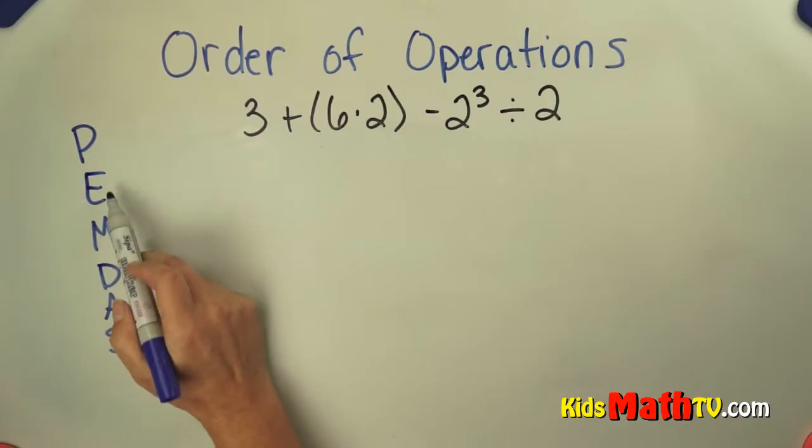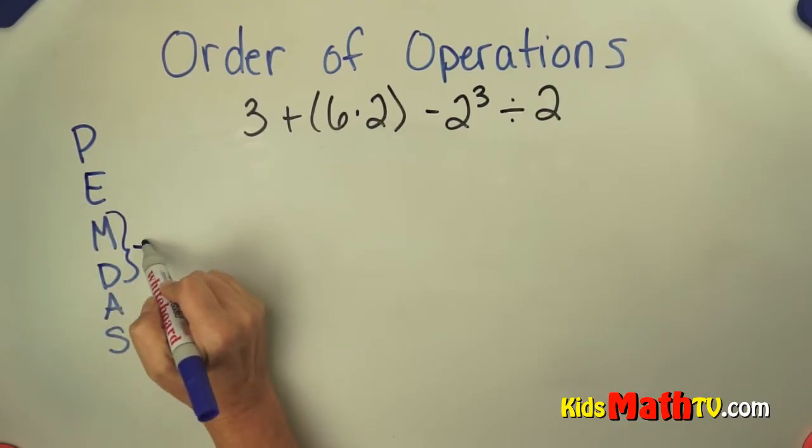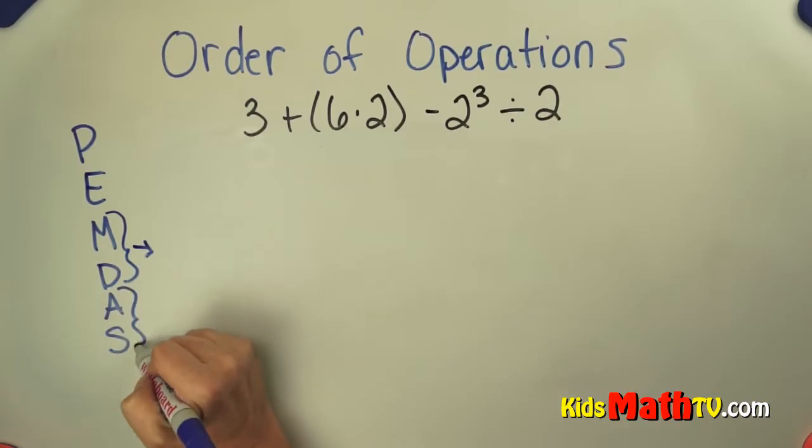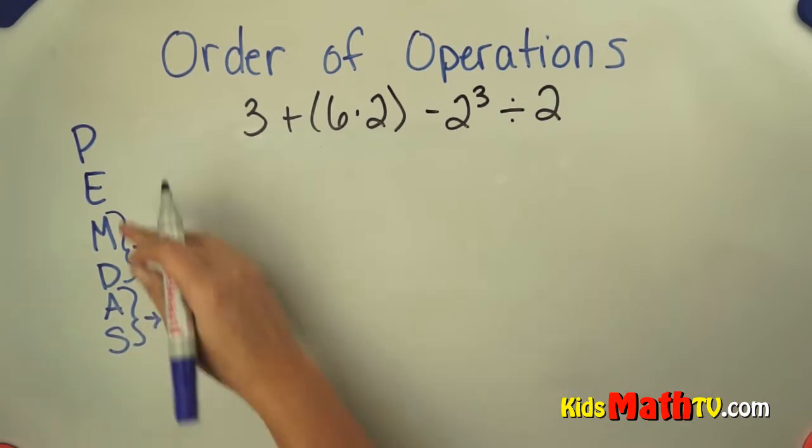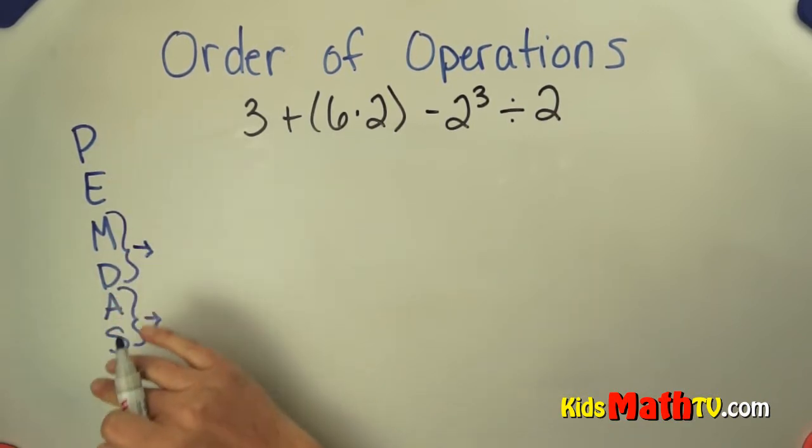P is for parentheses, E is for exponents. I multiply and divide from left to right, and then I add and subtract from left to right. You can write this on your paper. Just remember, Please excuse my dear Aunt Sally.